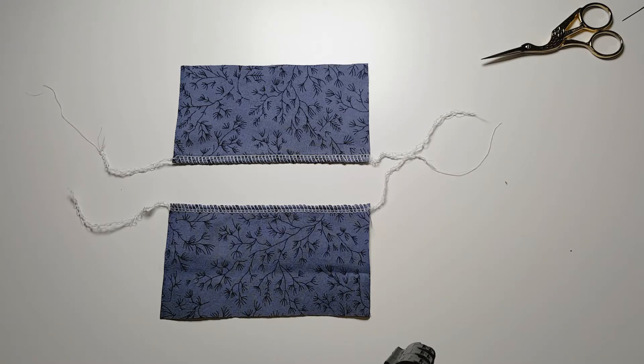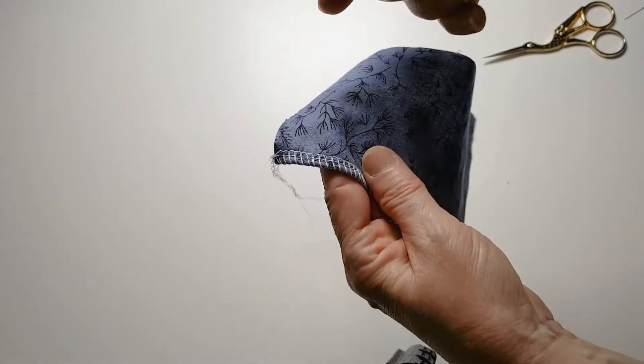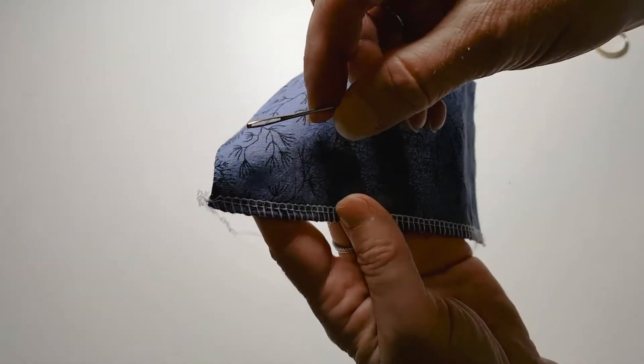The serger does not backstitch, so there are times you need to secure your thread ends. I'm going to show you three ways to do that. The first way is weaving.